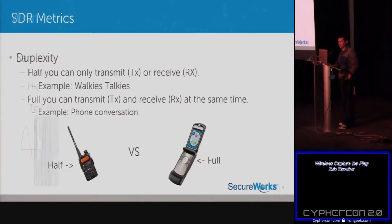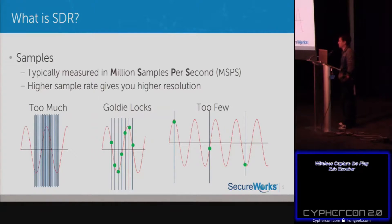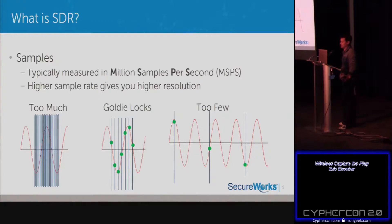Next is samples. Software-defined radios are often measured in MSPS — million samples per second. It's a double-edged sword: too many samples and your processor chokes; too few and you can't get a good signal. You want to hit the Goldilocks zone — enough samples for your processor to handle comfortably while still getting a clear signal.